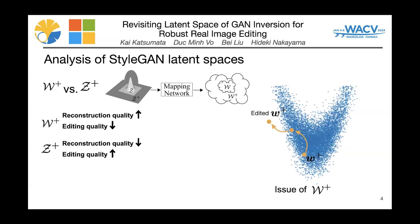Since W+ is more complex and does not have a hypersphere constraint, major GAN inversion methods use W+ space. Although W+ can reconstruct target images faithfully since the space is unconstrained, the edited images are sometimes collapsed. Unlike W+ space, Z+ has high editing quality and low reconstruction quality — meaning that Z+ can avoid image collapse after image editing.